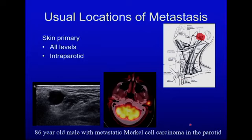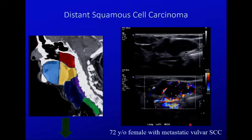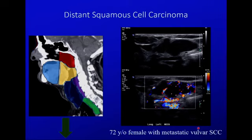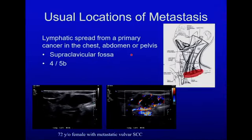Here is another example — a metastatic Merkel cell carcinoma of the skin. Squamous cell carcinoma or other carcinoma from a distant location, usually inferior to the clavicle such as lung cancer or metastatic vulvar cancer, typically involves the supraclavicular lymph nodes in the low neck. These usually occur near the clavicles as the initial presentation of metastasis from a distant primary. They can become more extensive and creep up the neck, but the most extensive disease usually remains in the supraclavicular fossa.